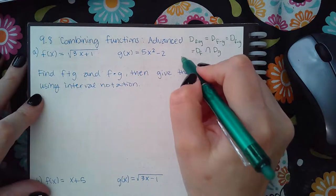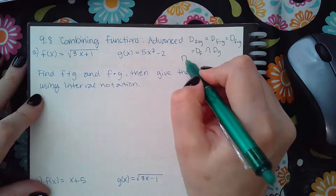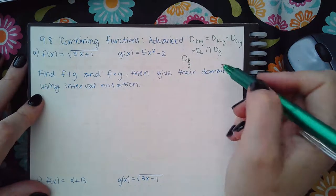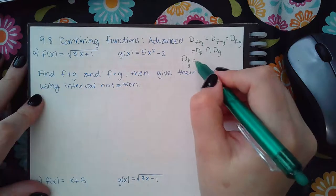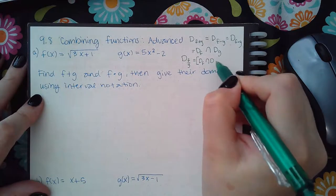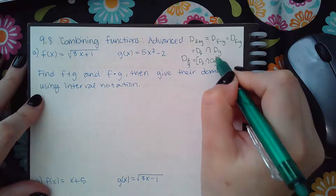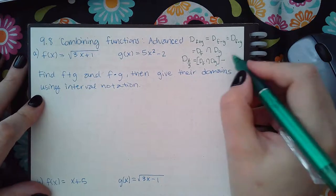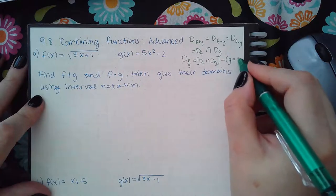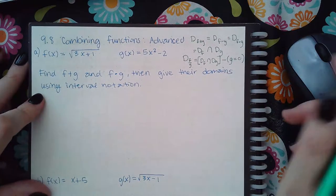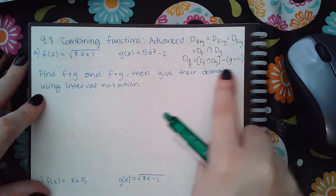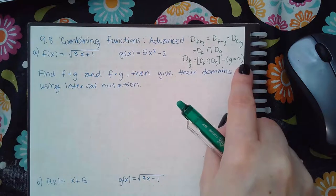The only one that's any different is when you have the fraction. When you have f over g, it is the domain of f intersect the domain of g, but you also have to go one extra step and remove wherever that denominator equals zero. So the domain of f over g is the one that's got a little extra to do — it's really the more difficult one.